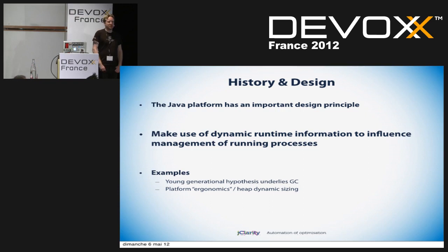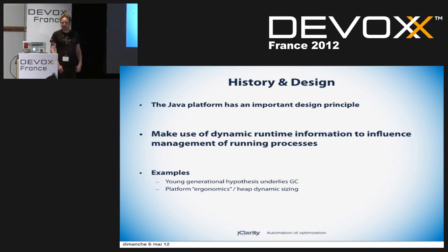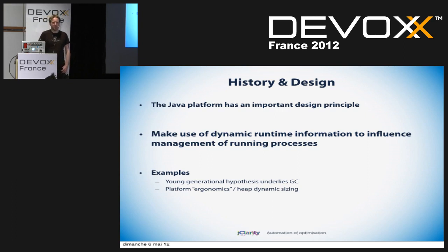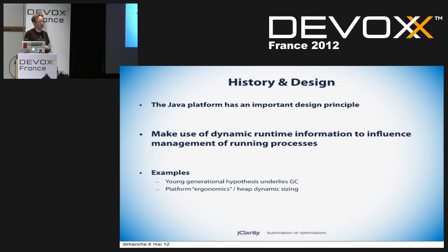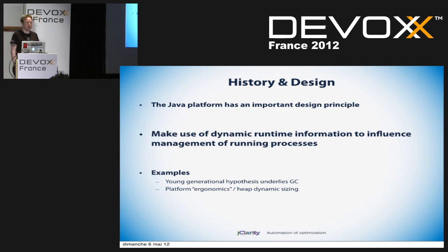There's one design principle which underlies the whole of the Java platform which you may never have thought about: the platform uses dynamic runtime information to make management decisions about executing processes. One of the great insights from the 1980s about software is that there's really interesting empirical evidence about the behavior of software that's only present in the runtime behavior. In a traditional C or C++ world, you do all your compilation up front and you don't have any information about the runtime behavior, so you can't make smart decisions about where to optimize.